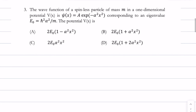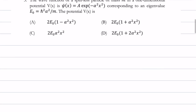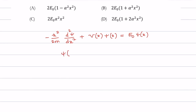In the third problem, the wave function of a spinless particle of mass M in a one-dimensional potential V(x) is given as Ψ(x) = A·exp(−α²x²), and it corresponds to an eigenvalue E₀. You have to find out the potential. To solve it, you just have to invoke the time-independent Schrödinger equation: −ℏ²/2M · d²Ψ/dx² + V(x)Ψ = E₀Ψ.